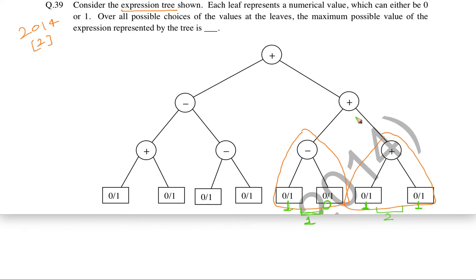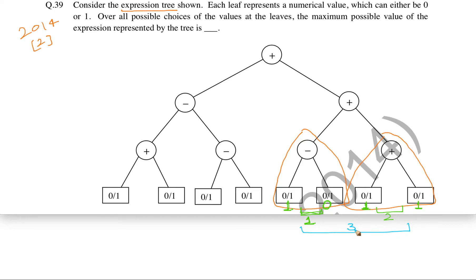Again here the plus operator is there. So the maximum value we found for one subtree is 1, and the maximum value for the other subtree is 2. We simply add these two values to get the maximum for this subtree: 1 plus 2, which is 3.